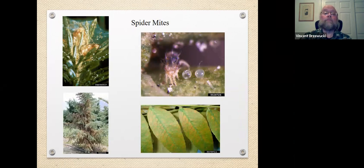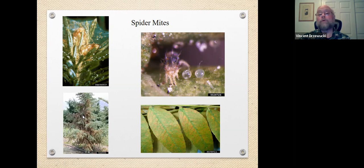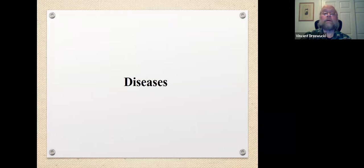Spider mites are very tiny and hard to see. They are related to spiders — they're arachnids with eight legs, unlike insects which have six. With spider mites, the telltale sign is very fine webbing that you'll often find. This is feeding damage from spider mites on a white spruce, and this is the damage done on deciduous leaves — a discoloration. You'll often find spider mites on the undersides of leaves. They're sap-sucking mites. Let's quickly go through some diseases.